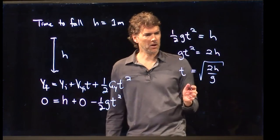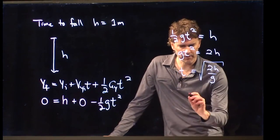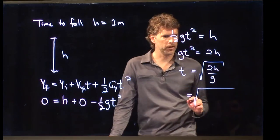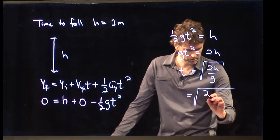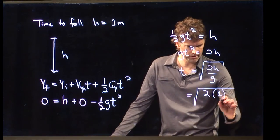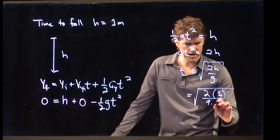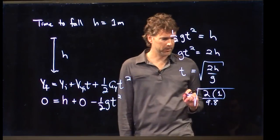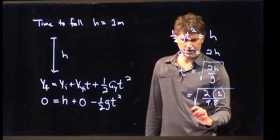Okay, so we can plug in these numbers. If we do that, what do we get? We get 2 times 1 meter divided by 9.8. You guys, somebody punch into your calculator those numbers and tell me what you get for your answer.